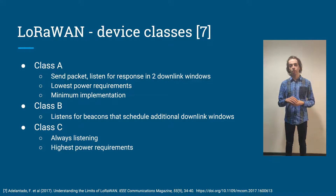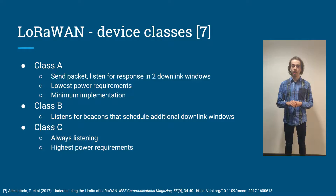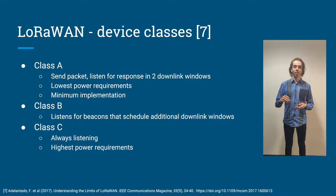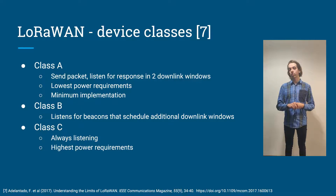Class B is an extension that allows the server to communicate extra downlink windows to the device. This means that Class B devices have extra listening opportunities. Class C devices are very power consuming, as they always listen.